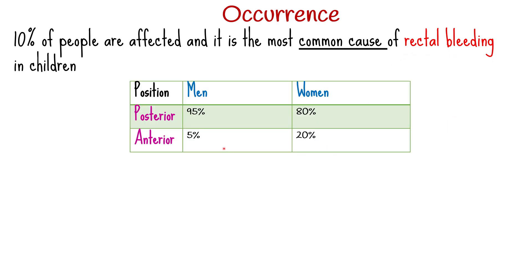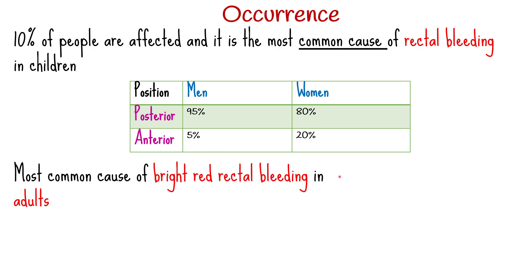In men, 95% of anal fissures are posterior, while just 5% are anterior. In women, 80% of anal fissures are posterior, whereas only 20% are anterior. Anal fissures are the most common cause of bright red rectal bleeding in adults.